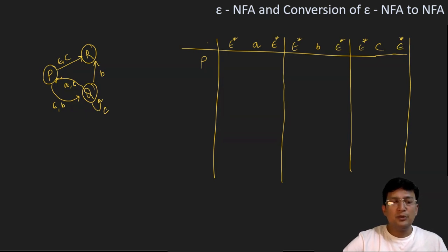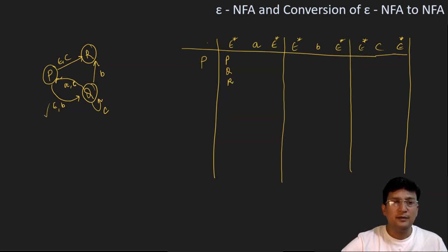The epsilon closure of p: p can remain at this state only by taking the symbol epsilon. And p can move to state q also by getting a symbol epsilon. And p can go to state r also by getting the symbol epsilon. So epsilon closure of p is {p, q, r}.